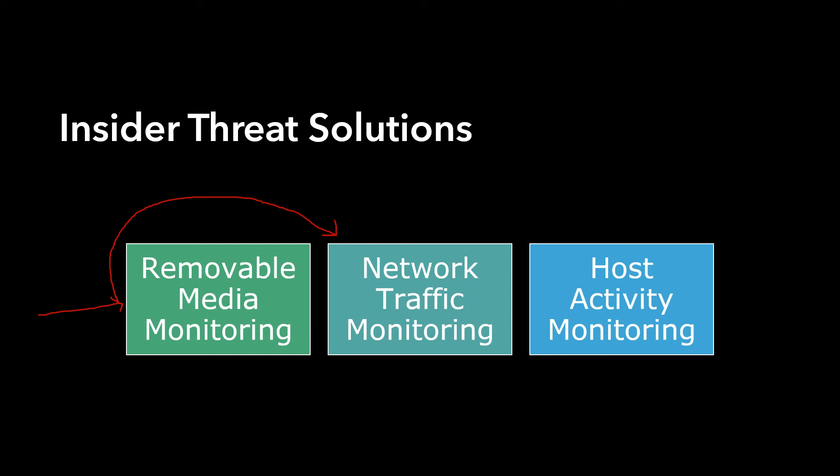However, network traffic monitoring has limitations — if an individual is using a personal VPN on the host machine, it becomes very difficult to identify what activity is being done. So finally it all boils down to host activity monitoring, where an agent is installed on the host machine to monitor the kind of activity the person is doing: applications accessed, files accessed, removable media connected, and so on. Host activity monitoring is the key and covers the last endpoint of the insider threat solution.